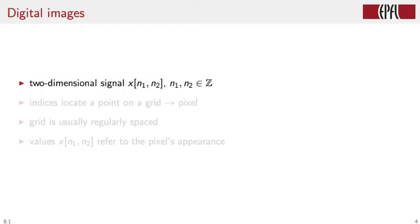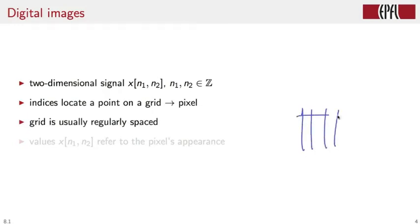Digital images can be expressed as a two-dimensional signal x of n1 and n2, where n1 and n2 are integer numbers, integer indices. And each combination of n1 and n2 indicates a point on a grid. We know already from everyday life that we call these points pixels as picture elements. Usually the grid is regularly spaced, so we have a regular arrangement of points on the grid, and the value of the signal at coordinates n1 and n2 refers to the pixel's appearance.